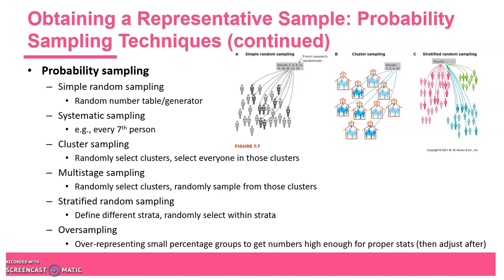Stratified random sampling is somewhat similar, except the strata are defined beforehand — they're not randomly selected. You might define strata as elderly, middle-aged, young adults, and adolescents, then randomly select ten subjects within each stratum. Oversampling is sometimes done when you have small or rare groups where you may not get enough participants to run good statistics because the sample sizes are too small. You may over-represent those small percentage groups and then adjust afterward using a procedure called weighting.